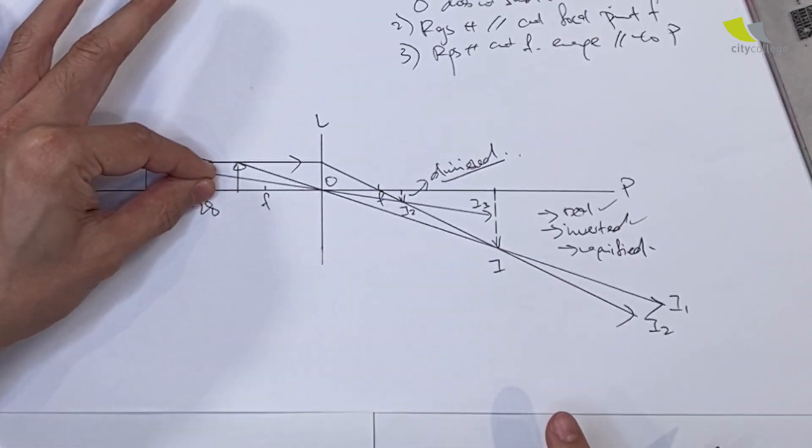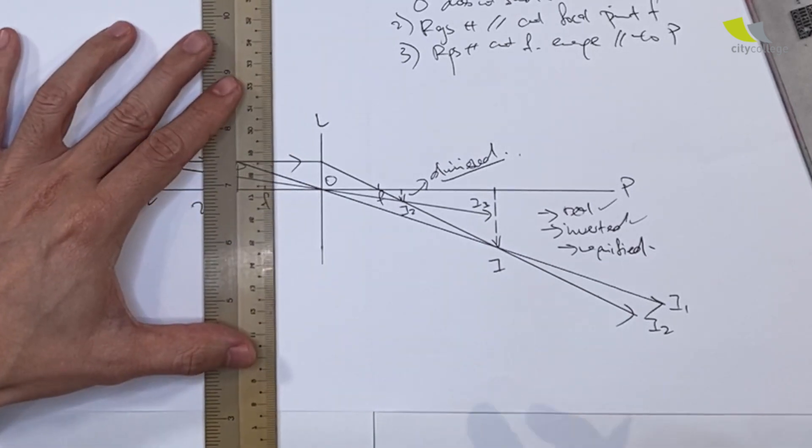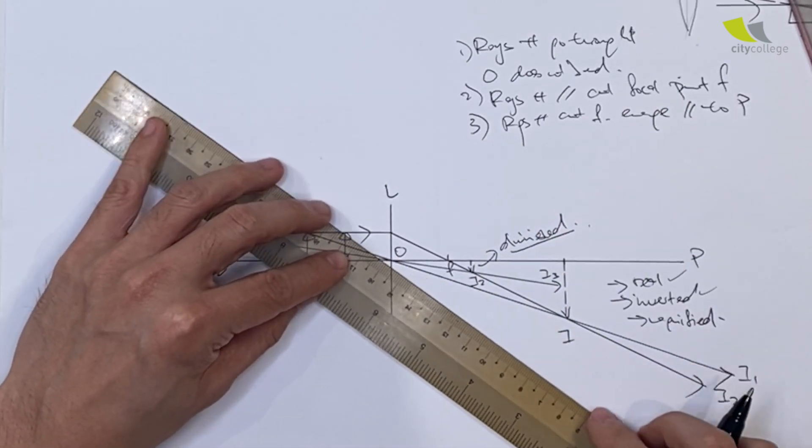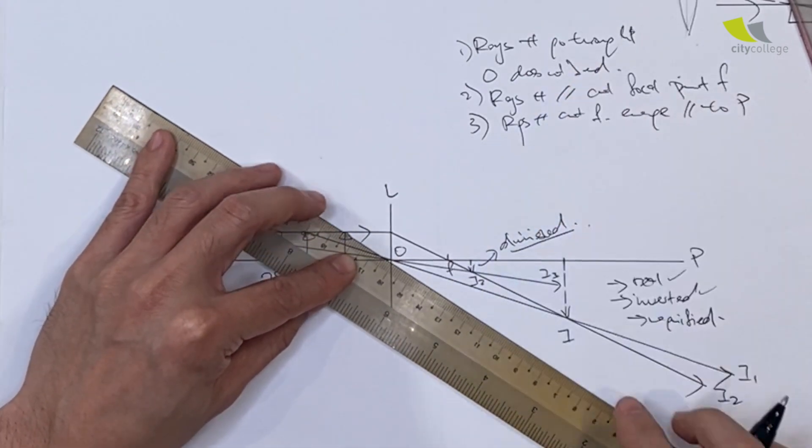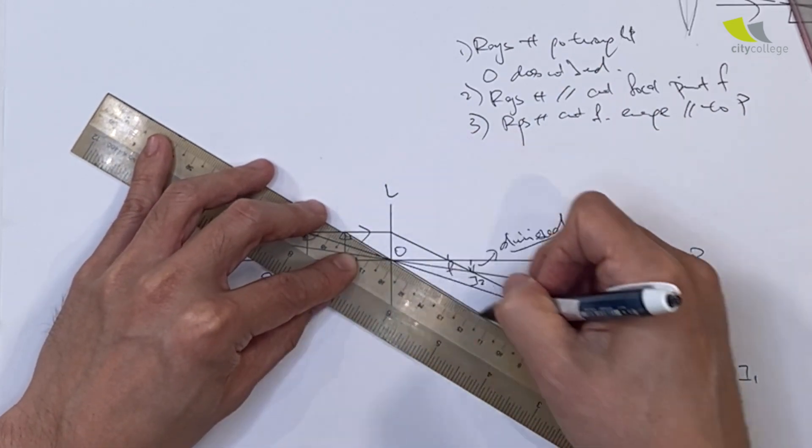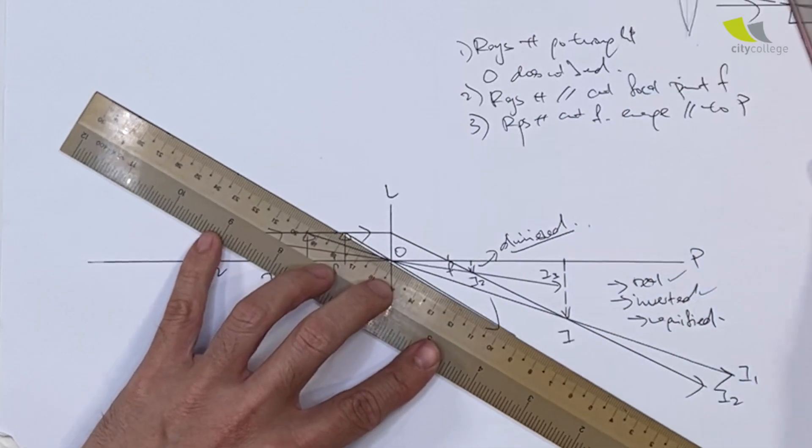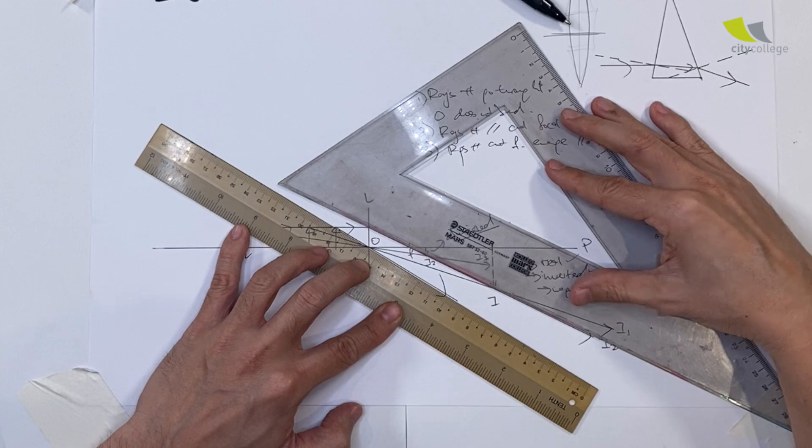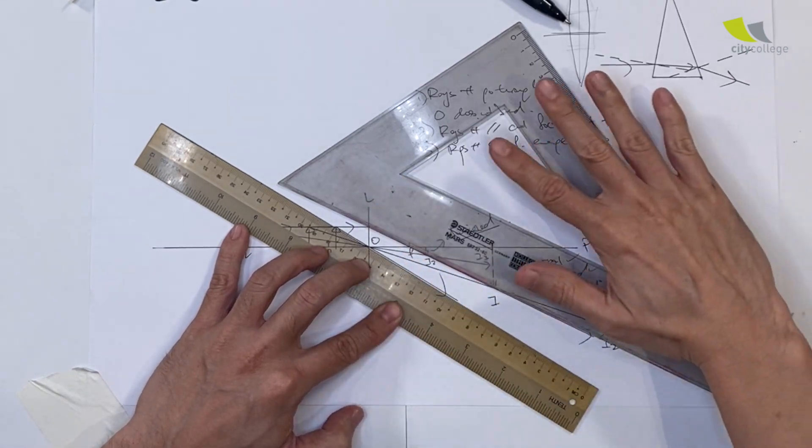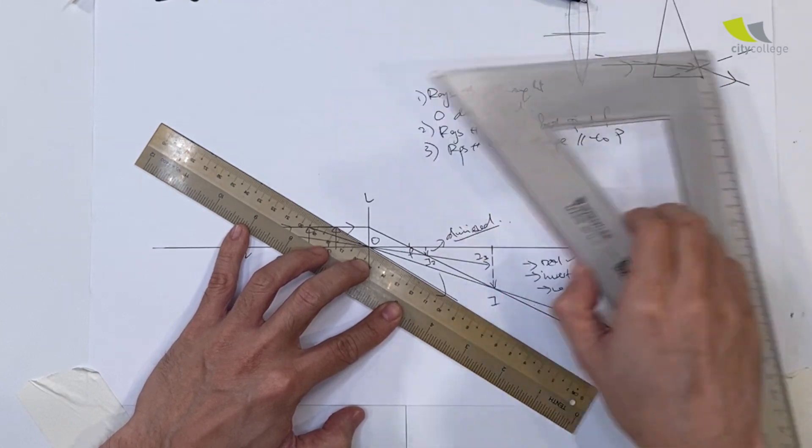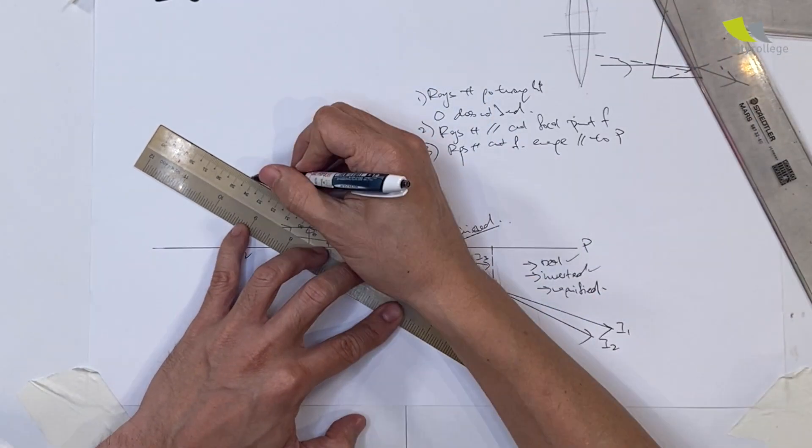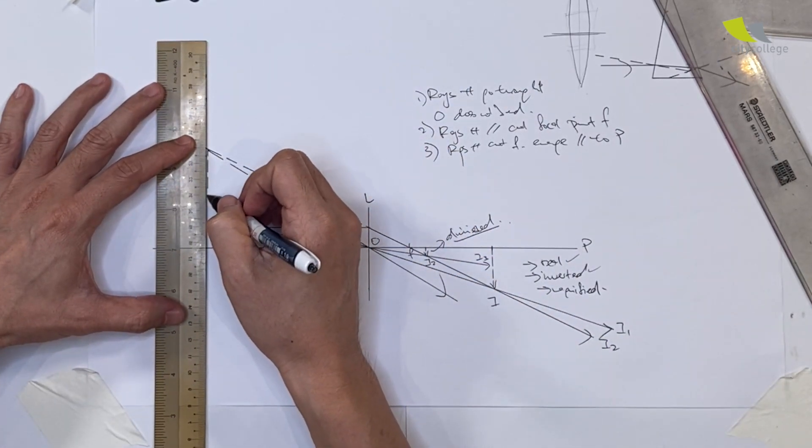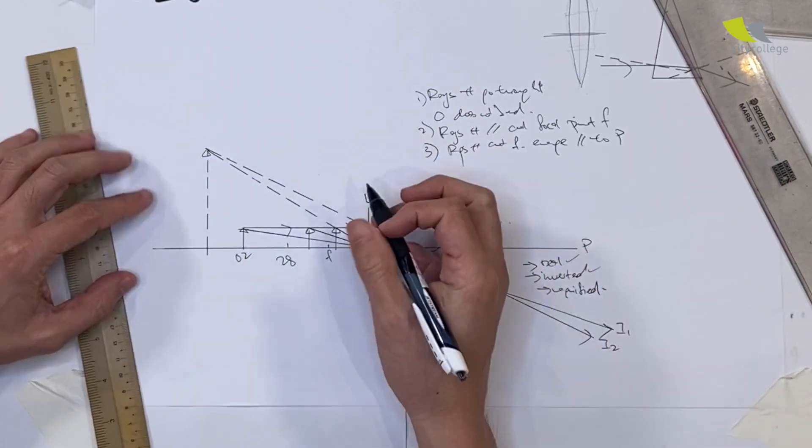Any object beyond two focal lengths away will become smaller. If the object is within one focal length away, how will my image be? If I draw the first line that goes through the optical center, it doesn't bend. You realize that this line and the other line don't meet on this side - they actually meet at the other side of the lens. I extend the line, and it cuts here. This is my image.